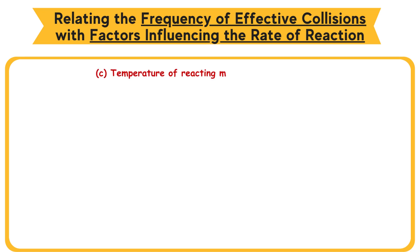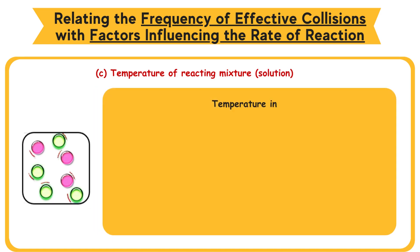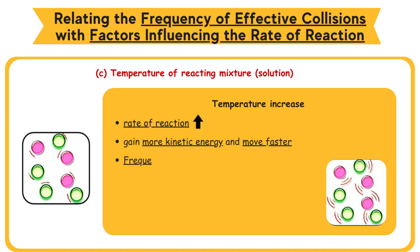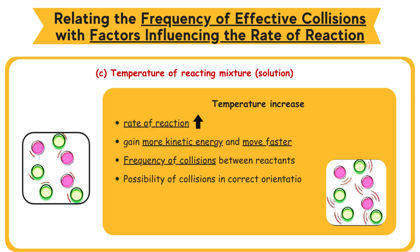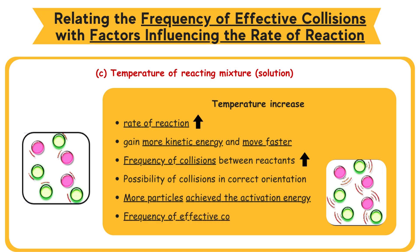c. Temperature of reacting mixture (solution): An increase in temperature causes an increase in rate of reaction. Reactant particles under higher temperature gain more kinetic energy and move faster. Frequency of collisions between reactants increases. Possibility of collisions in correct orientation increases. More particles achieve the activation energy. Frequency of effective collisions increases.